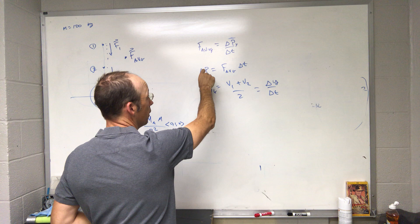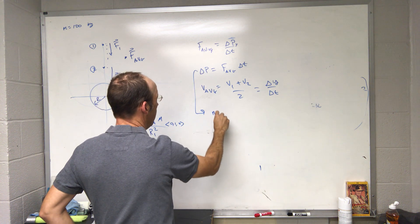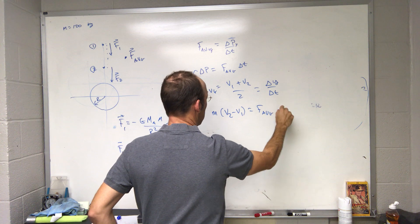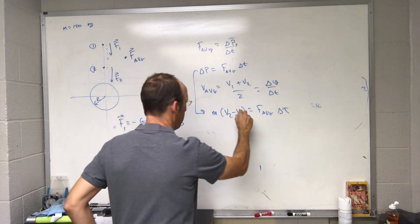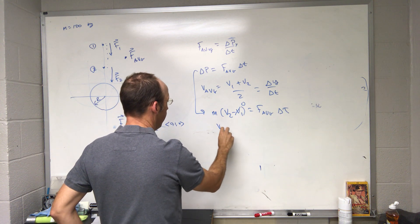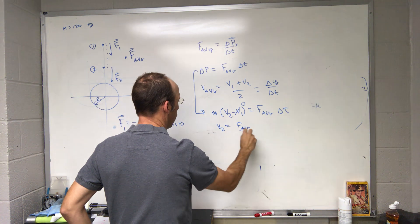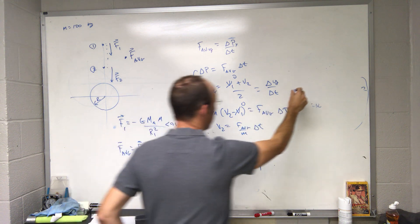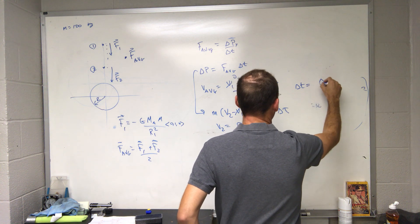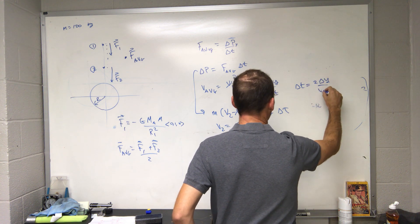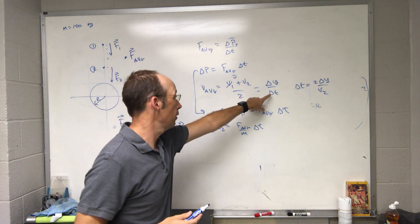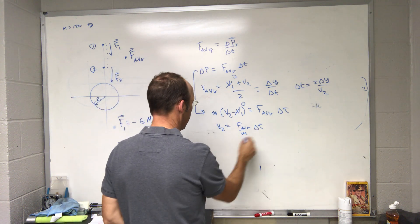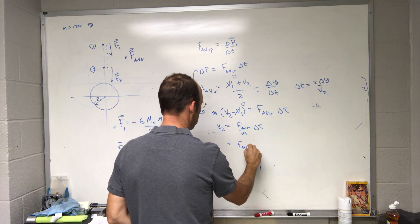So right here I can solve for delta t and then I can plug that in up there and solve for the final v. Let's say m times v2 minus v1 equals F average delta t. I know that v1 is zero. And I can then say v2 equals F average over m delta t. And then over here I can again say v1 is zero and I can solve this for delta t. I get delta t equals delta y times 2 over v2. So I put that in, I get F average over m and I get two delta y, that's v2 over v2.